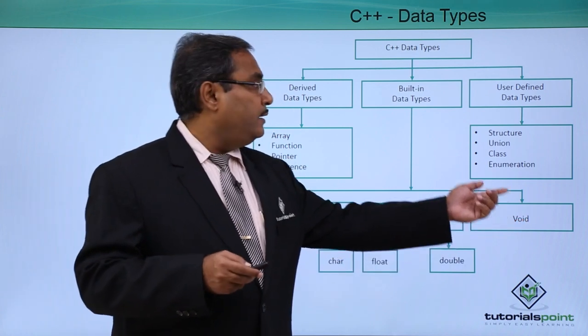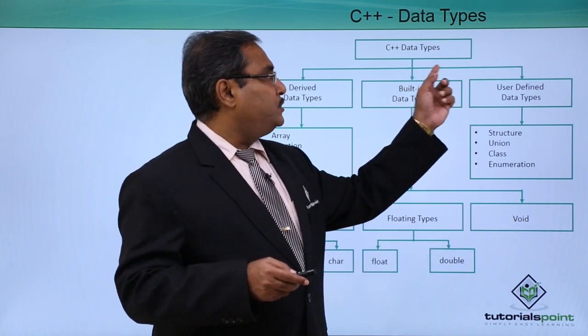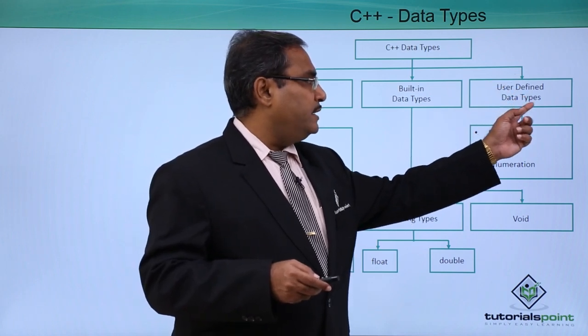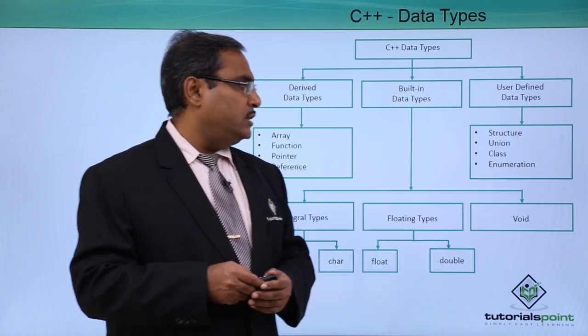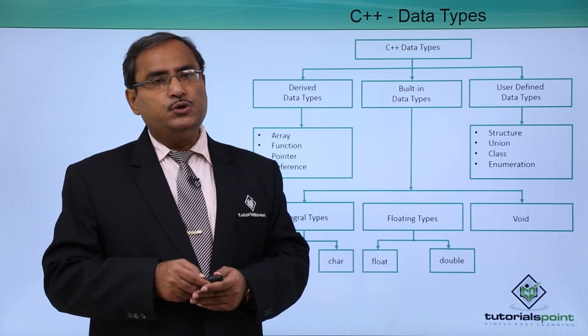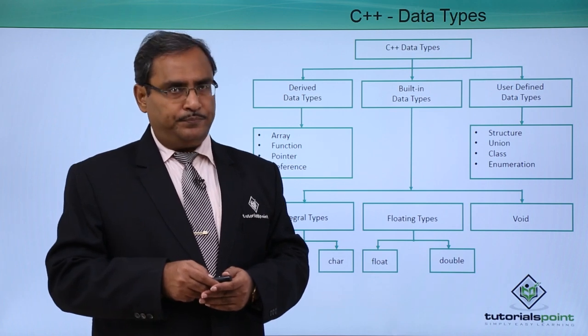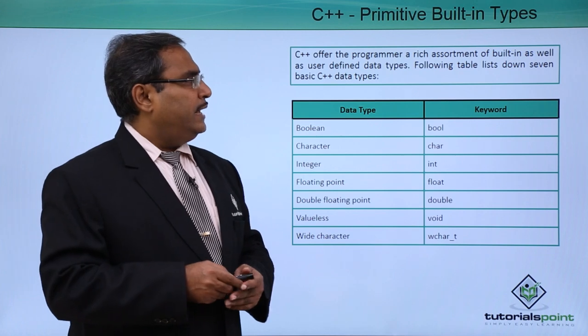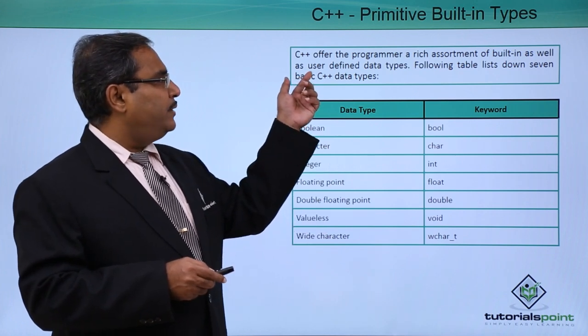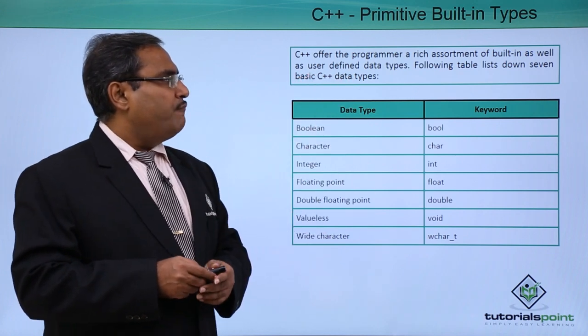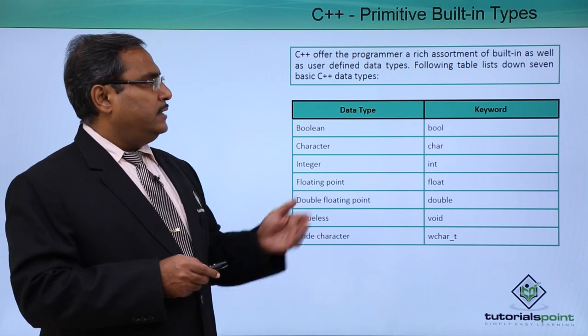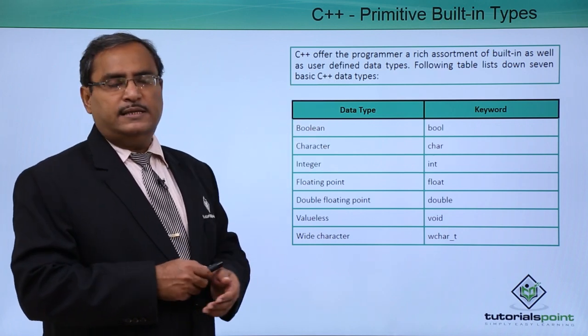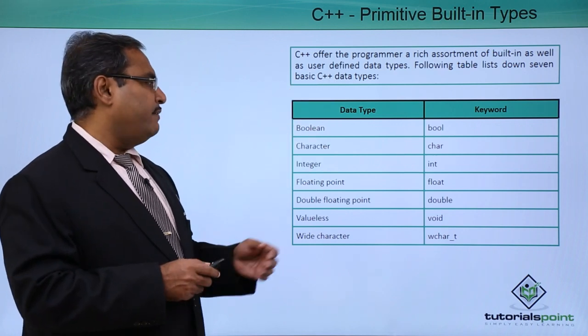In case of C++ data type, user-defined data types will be like your structure, union, class, enumeration, and so on. C++ offers programmers a rich assortment of built-in as well as user-defined data types. Following table lists the seven basic C++ data types that are available.